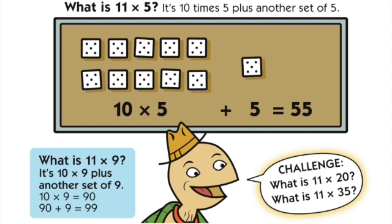What about 11 times 35? Well, I could take 35 times 10 and get 350, and then add 35 more and get 385. How did you do with those challenges?